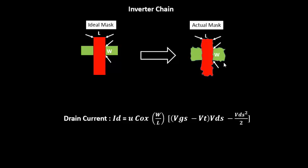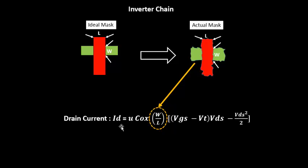This is one source of variation. Now, how does W and L affect things? If you look into the drain current equation of a MOSFET, it is: I_d = μ·C_ox·(W/L)·[(V_GS − V_T)·V_DS − V_DS²/2]. So the drain current is directly related to your W by L. Any variation that you see in W and L will directly impact the drain current. The question is: how does the impact on drain current then impact the delay of the inverter? We'll be looking into that.